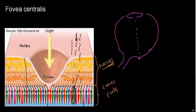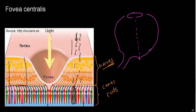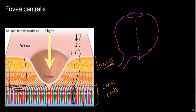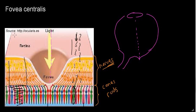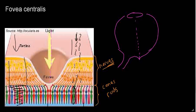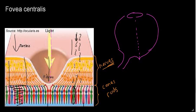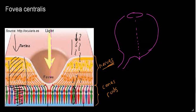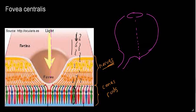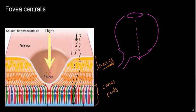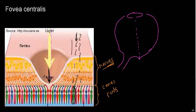In the fovea, which is on the optical axis, we have only cones. Anywhere else in the retina, we have a layer of cones and rods, and right before them a layer of nerve tissue. When light comes in, unless it's entering the fovea, the first thing it meets is the nerve tissue, which slightly attenuates and absorbs it before it reaches the receptors.